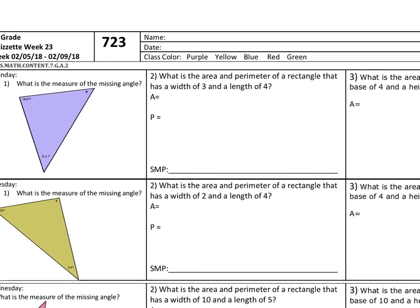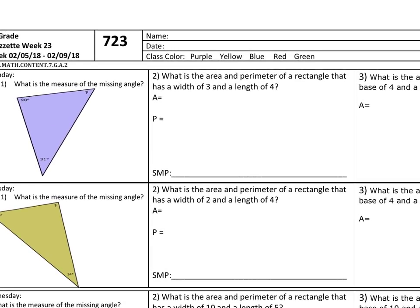Good morning or good afternoon, Tigers. Today we'll be watching a video on Quizette 723. As always, please write your last name, comma, first name. Write today's date, which today will be February 6, 2018. Today I'll say I'm in red class.